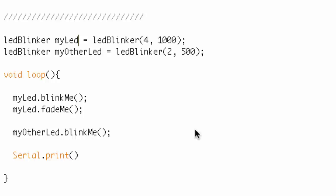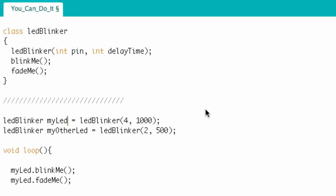Let's do a quick recap. A class is like a really cool data structure — it has data and it has functionality. A class has to have a name, and it also has to have a constructor, and the constructor is always the same name as the class. The constructor has all the information you need to make a specific instance of that class. Think of the constructor as the cookie cutter, and the instance as the actual cookie that you eat.